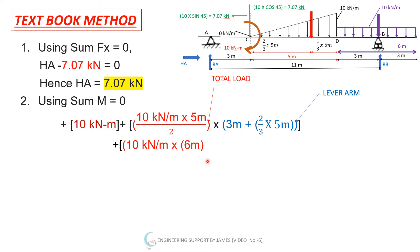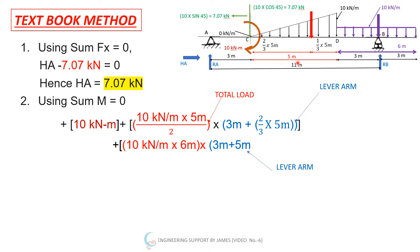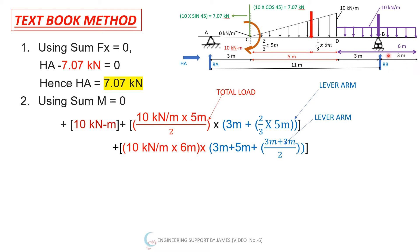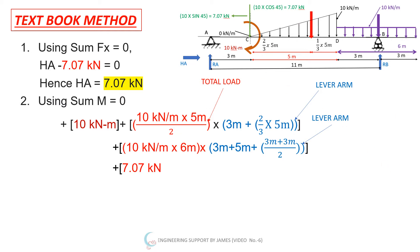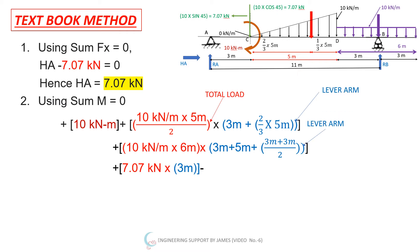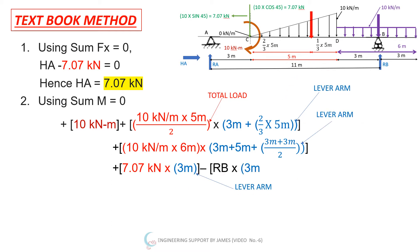Continuing the moment equation: the UDL of 10 kN/m over 6 m has a lever arm of 3 m + 5 m + (3+3)/2. The vertical component of the inclined load, 7.07 kN, acts at a lever arm of 3 m. RB produces an anti-clockwise moment, so minus RB × 11 m (which is 3+5+3). Setting the whole equation to zero and solving gives RB = 77.23 kN.